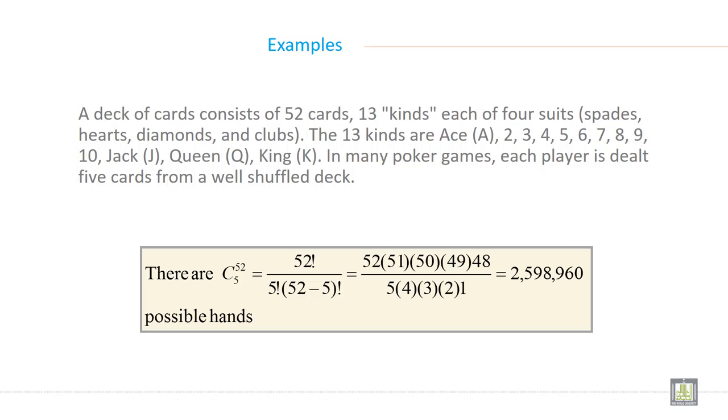The 13 kinds are Ace, 2, 3, 4, 5, 6, 7, 8, 9, 10, Jack, Queen, King. In many poker games, each player is dealt 5 cards from a well-shuffled deck.